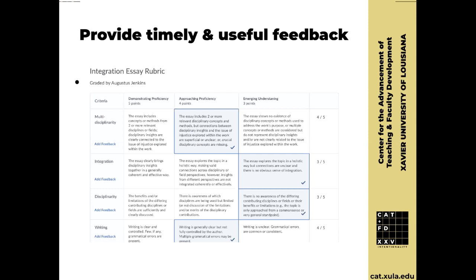Rubrics make grading a whole lot easier. If you use them thoroughly, you're providing students with a constant stream of feedback automatically based on how they did, so when a student looks at the paper they don't just say 'why did I get 75%?' — they look and say 'why did I do poorly on the literature integration component?' Right there you cut through a lot of the unnecessary back-and-forth and get to the real conversation.